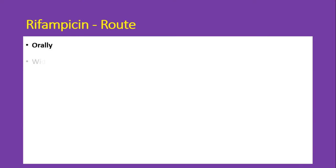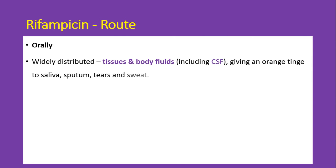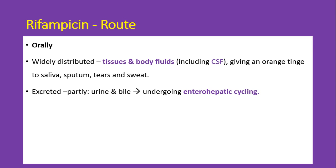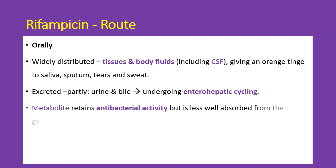Rifampicin gets widely distributed in the tissues as well as body fluids including the CSF, where it can cause orange-tinged secretion from saliva, sputum, tears, and sweat. It gets excreted partly in the urine and partly through the bile, and it undergoes the enterohepatic cycle. The metabolites formed from rifampicin retain antibacterial activity but are less well absorbed from the gastrointestinal tract.